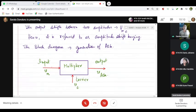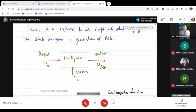And this is the block diagram of ASK. This is a block diagram which is used to generate an ASK signal.